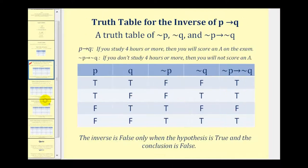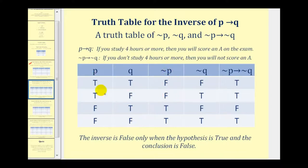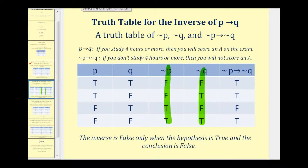Let's take a look at the next example. We want to complete a truth table for not p, not q, and if not p then not q — which is actually the inverse of if p then q. We'll list p and q as before. Notice that p and not p are just opposites: when p is true, not p is false, and when p is false, not p is true. The same applies to q and not q. To complete the last column, we look at the third and fourth columns, and again this conditional statement is only going to be false when the hypothesis not p is true and the conclusion not q is false.